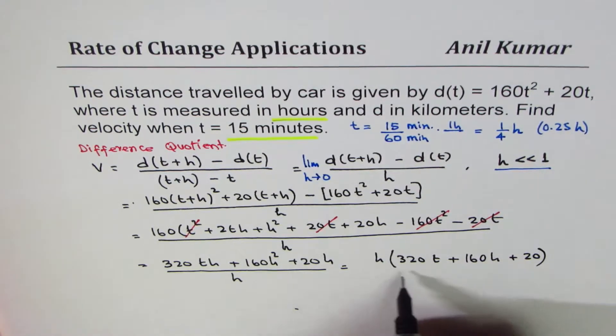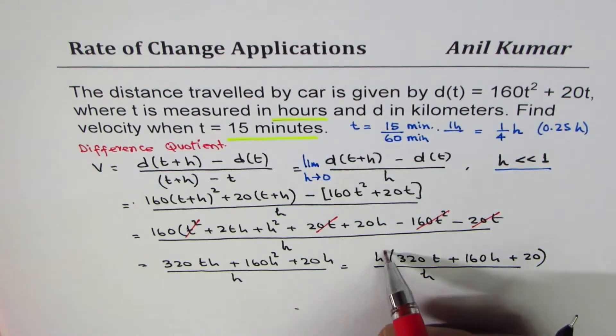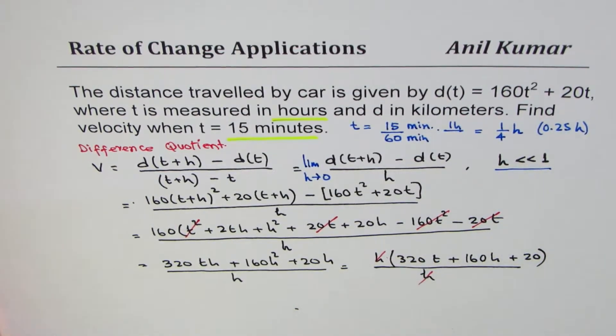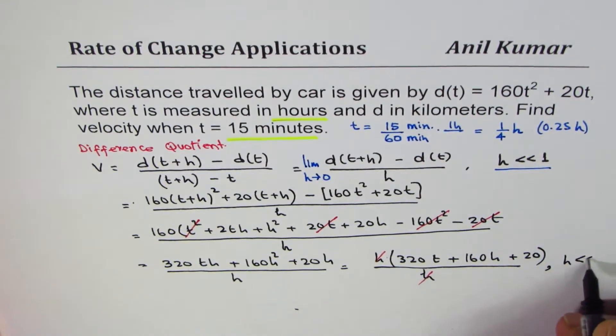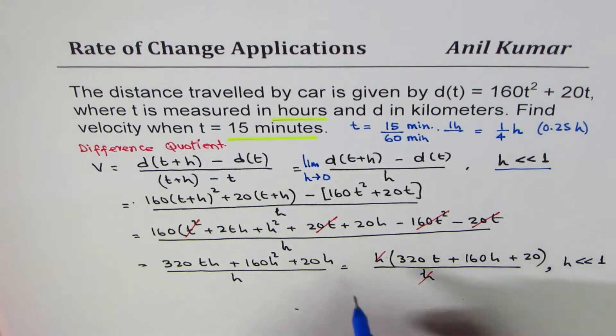Over h you can cancel h and h, so that is the expression for us. Now at this stage what we know is that h is very very small as compared to 1. Those of you who are working calculus may think like this, limit h approaching 0. So if we substitute 0 here we get rid of this term.